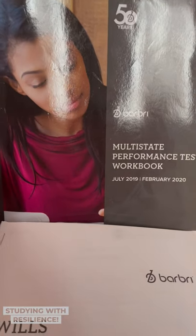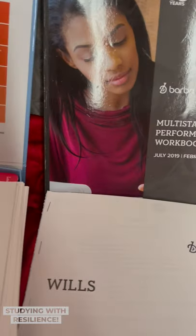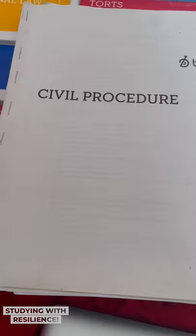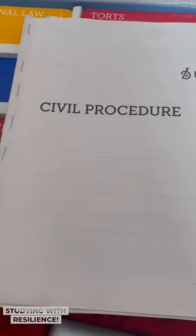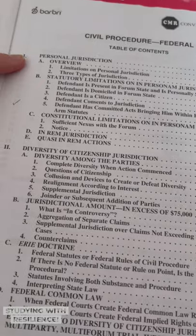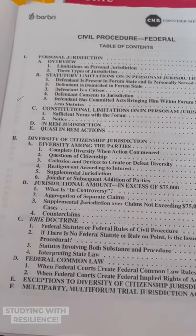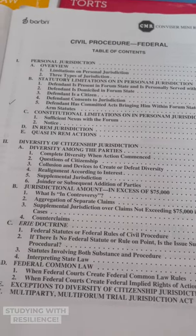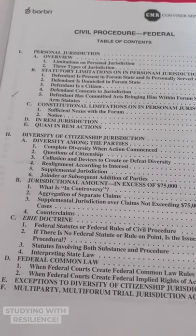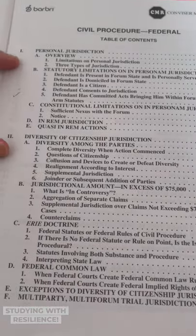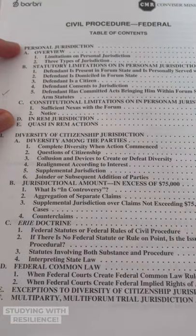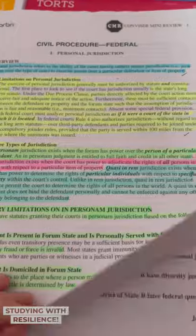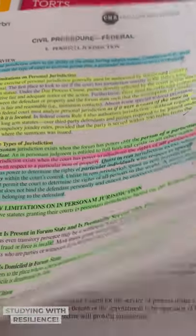When Barbri sends you your box, they'll send you a book called the Convizer Mini Review. Because it's overwhelming otherwise, I actually just ripped it apart and took out different sections. This is Civil Procedure, stapled together on the side. If you look at the contents page, you can see there's personal jurisdiction, diversity, and other sections. In my timetable I chunked different sections — there's no way I could do all of Civil Procedure in one day, so I just do one section, like personal jurisdiction.